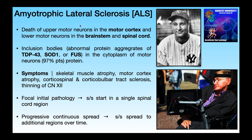The biochemical mechanism is going to largely involve the formation of structures called inclusion bodies. Inclusion bodies are abnormal aggregates of specific proteins. The three most common that we observe in ALS are aggregates of TDP43, SOD1, or FUS.